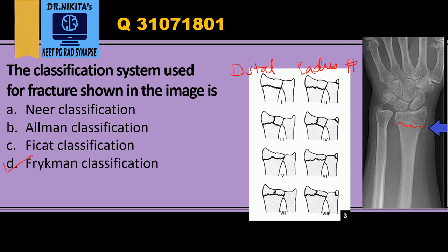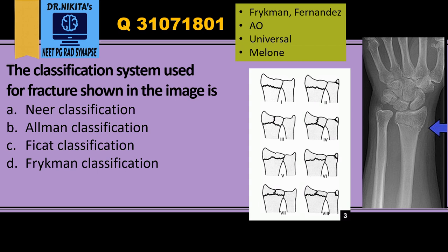The Frykman classification is a frequently used system which takes into consideration the involvement of the articular surface (joint) and the involvement of the ulna. There are other systems also for distal radius fractures. To remember them, the mnemonic is FORM — Frykman, Fernandez, AO system, Universal system, and Melone's system. So out of the options, the answer is Frykman classification.